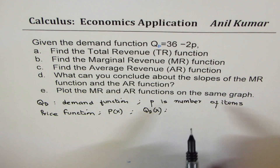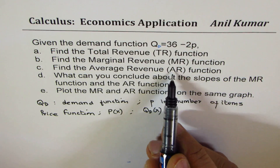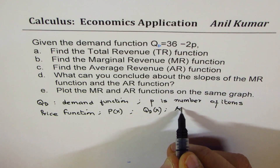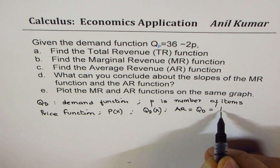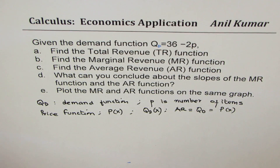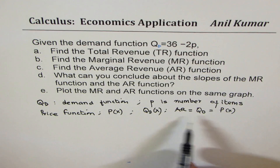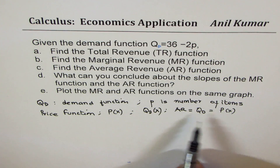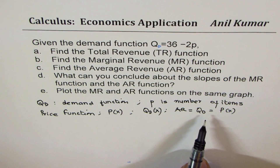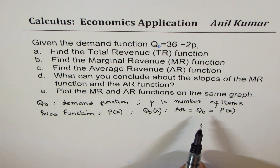We'll soon realize that the average revenue function is also equal to q_d, and all three things — demand function, average revenue, and price function — are equal. So all three are more or less the same thing. That should help you understand the solution from here onwards.